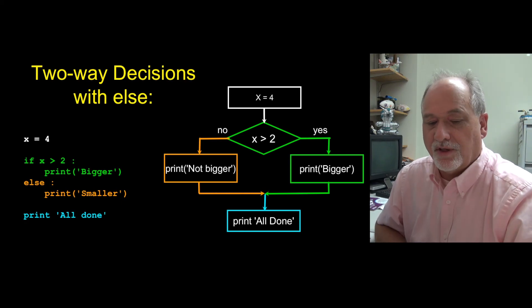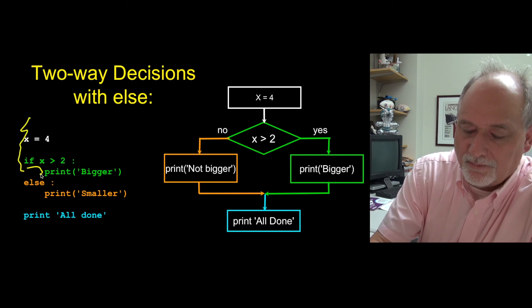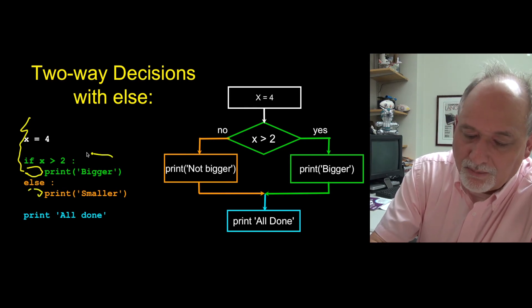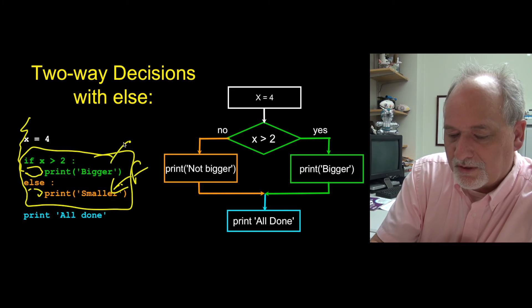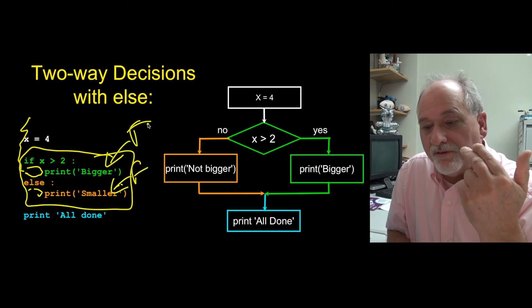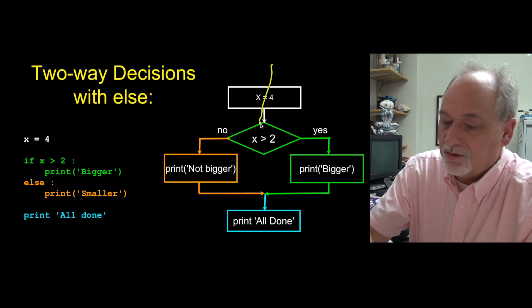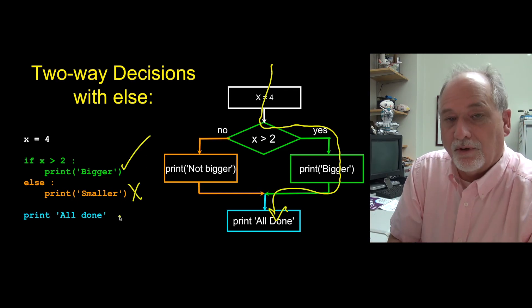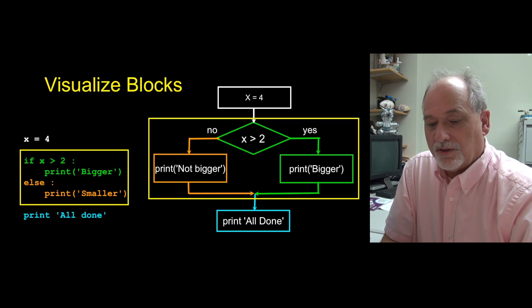And the syntax that we use for this is what we call the if-then-else. The first part is a normal if with an indent, and then we de-indent, and then this is another reserved word, else, with a colon, and then we re-indent. The first indented block is what runs if it's true, and the second indented block is the one that runs if it's false. So here we go, if x is greater than two, in this case it's yes, we're going to print bigger and then we're going to be all done.